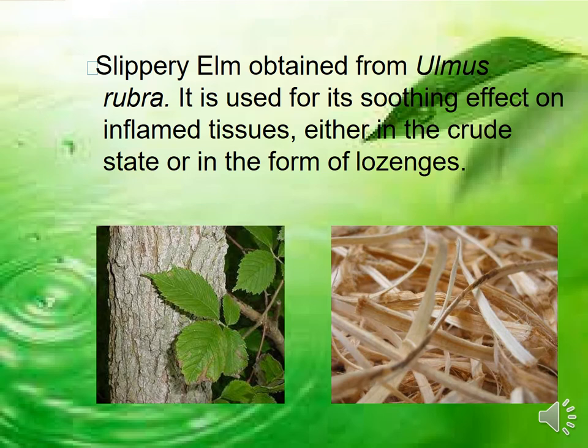Slippery elm can be used as it is, or in the form of lozenges — diamond-shaped tablets — which are made from the bark. Slippery elm species are Ulmus species found in North America.